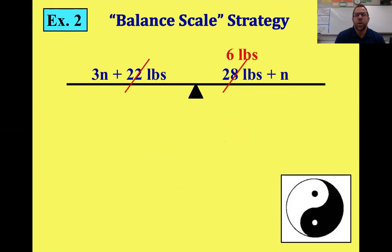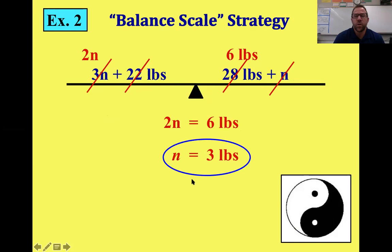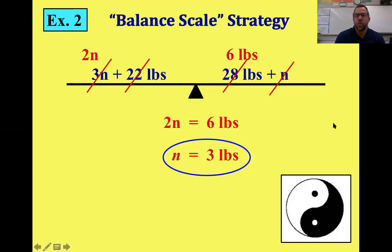Removing 22 pounds from both sides leaves 6 pounds on the right. Then we remove 1 nugget from both sides — 3 nuggets minus 1 leaves 2 nuggets on the left, and the right side's nugget is gone. So we rewrite: 2n = 6. Dividing 6 by 2 gives us n = 3 — each nugget weighs 3 pounds. Remember: whatever you do to one side, balance it on the other side.